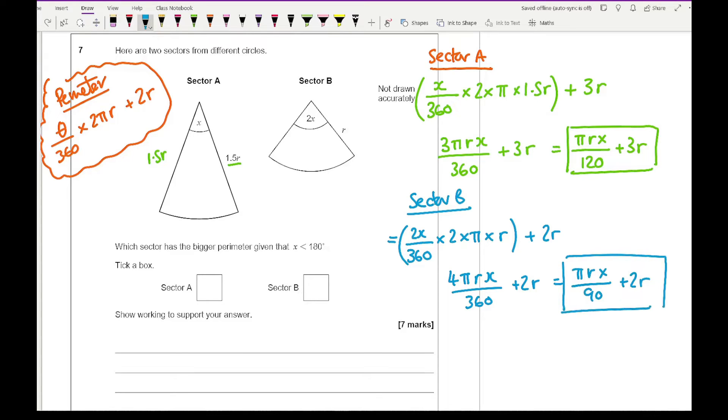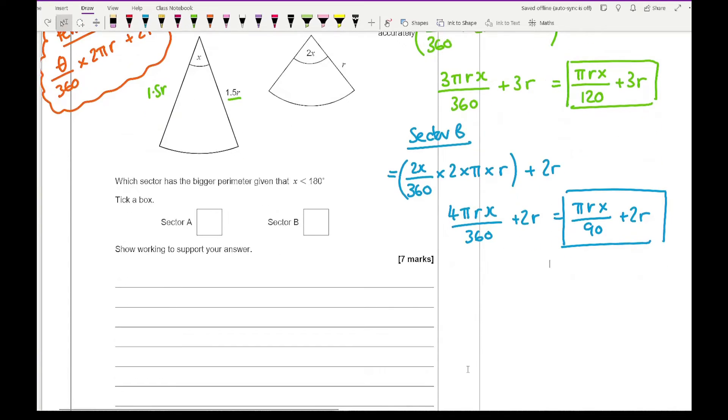Now what I need to do is compare the green box with the blue box. At the moment it's really difficult to compare because I don't know what x is and I don't know what r is, so there is an issue.